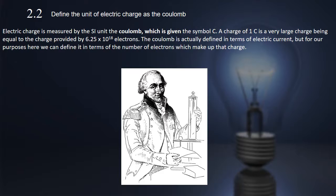A charge of 1C is a very large charge, equal to the charge provided by 6.25 times 10 to the 18 electrons. The coulomb is actually defined in terms of electric current, but for our purposes we can define it in terms of the number of electrons which make up that charge.